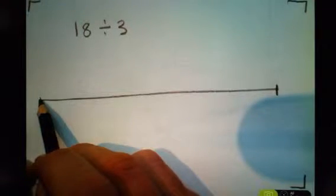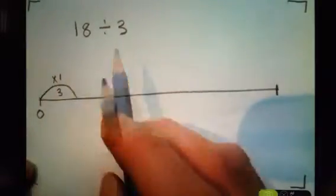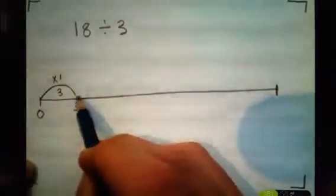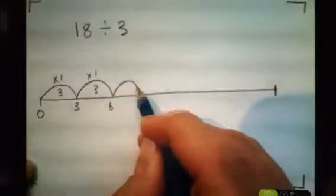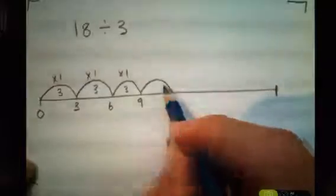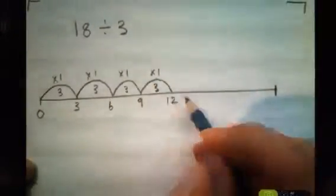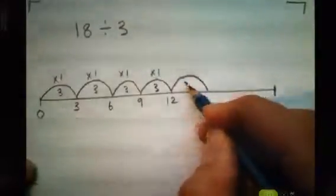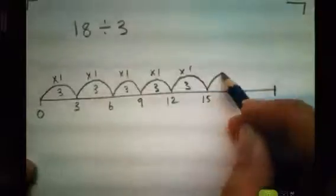Alright, here we go. My first: one times three gives me three. Times one three gives me six. Times one three gives me nine. Times one three gives me twelve. Times one three gives me fifteen, and then...